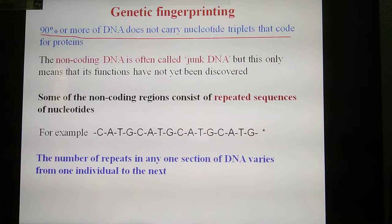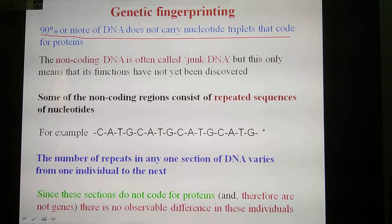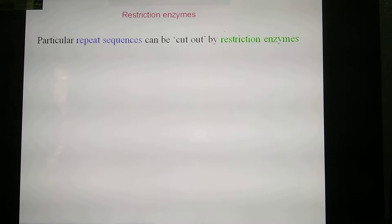For example, the number of repeats in any one section of DNA varies from one individual to the next. This is very important for DNA fingerprinting. Since these sections do not code for protein and therefore are not genes, there is no observable difference in these individuals. This is very important.